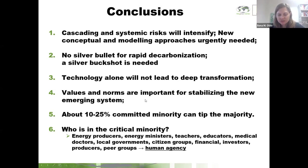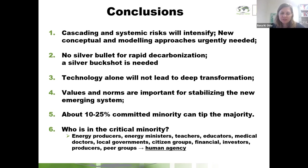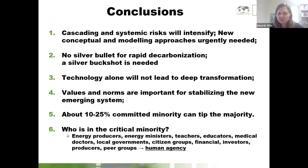Normative changes are slower but they stabilize the newly emerging system. There is multiple evidence that small committed minorities — depending on the type of subsystem and network — can tip the majority. Some authors talk about as few as three and a half percent; in financial systems about 9%; in systems of social norms about 25%. But there is evidence that small, organized, and motivated groups can change or tip the majority. At the end, each of us can be in this critical minority — we need energy producers, energy ministers, teachers, educators, medical doctors, and citizen groups to use these different aspects of human agency to push for those changes.